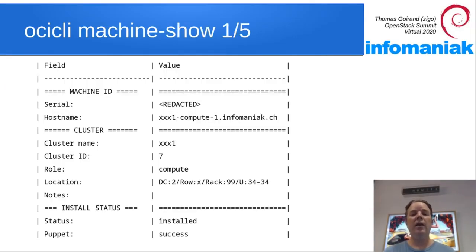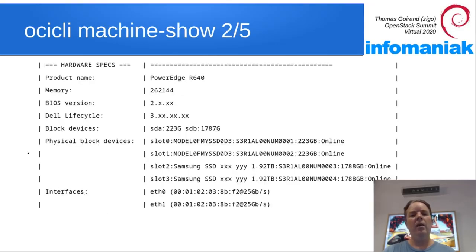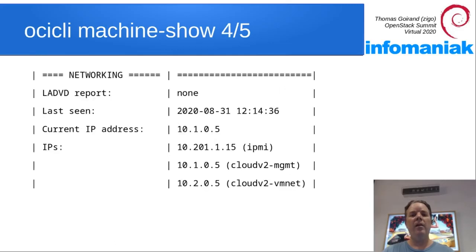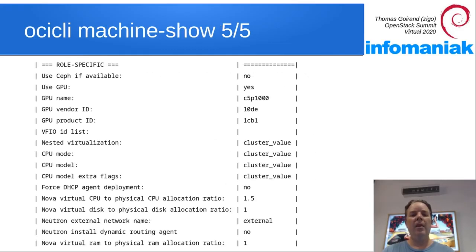Once a hardware node has booted and reported to OCI, you can run `oci-cli machine show` with the serial number and see detailed information: the initial status, hostname, hardware specs, IPMI configuration, networking, and role-specific values that you can tweak depending on what you want to do with the hardware node.